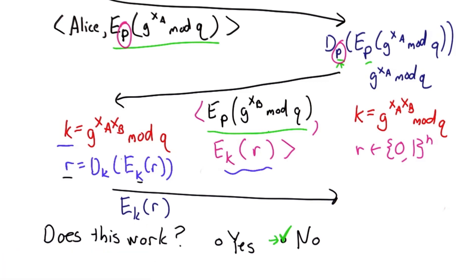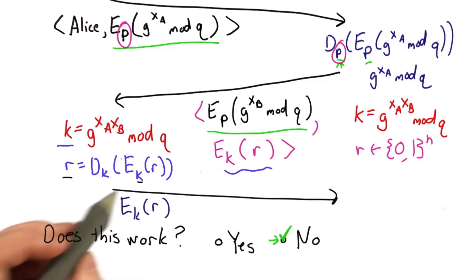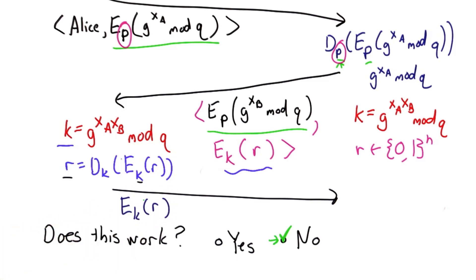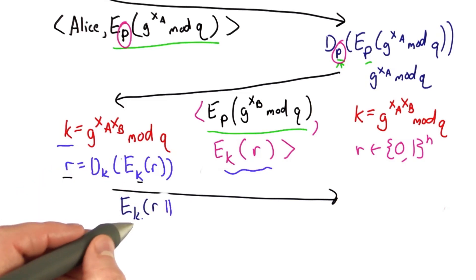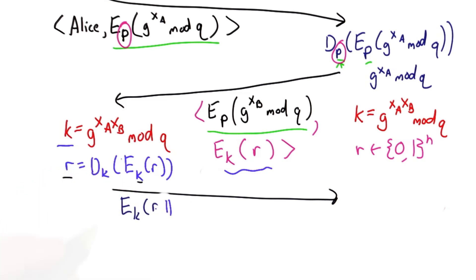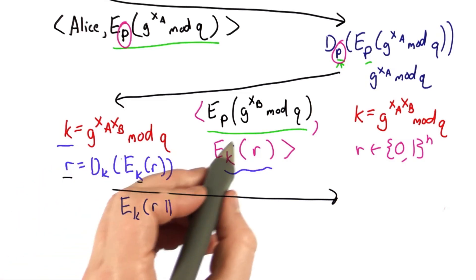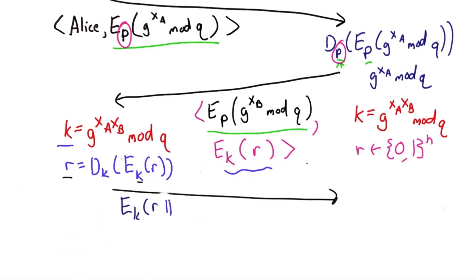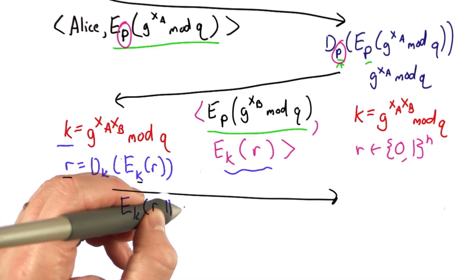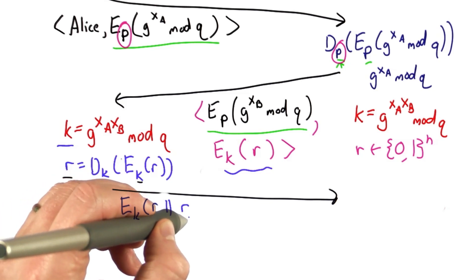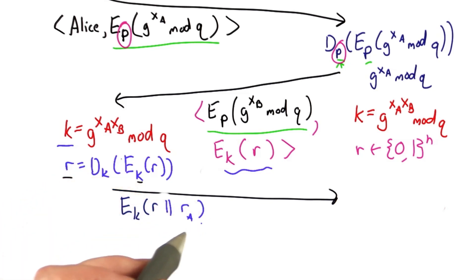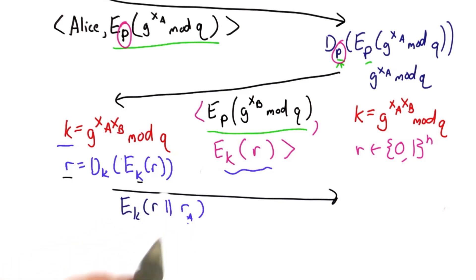We need to do something a little different. Instead of encrypting just R, we need to encrypt something else that proves knowledge of K and R, but couldn't be generated just by replaying this. One way to do that would be to add another nonce — concatenate a new nonce and encrypt the concatenation of those two.